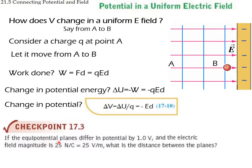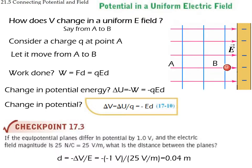For example, if equipotential planes differ in potential by 1 volt and the electric field is 25 volts per meter, what is the distance between equipotential planes? We use delta V equals Ed: the distance is 1 volt divided by 25 volts per meter, which gives 0.04 meters — four centimeters.